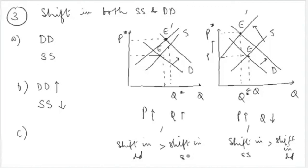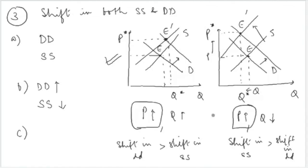As a conclusion, whenever there is a shift in both the supply and demand curves in opposite directions, prices are definitely increasing in both cases. However, the effect on quantity is ambiguous — it is uncertain and depends on the relative magnitude of the shifts in the demand and supply curves.